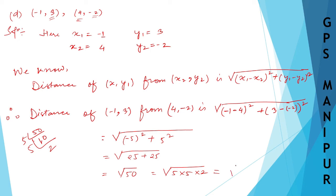So which will be root over 5 into 5 into 2. So, 5 into 5 root over 5 square into root over 2, square root cancel, so which will be equal to 5 root 2.